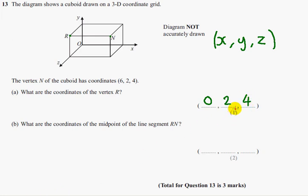So that's worth one mark, part A, and you have to have 0, 2, 4 to get that mark. So part B says, what are the coordinates of the midpoints of the line segment R, N?